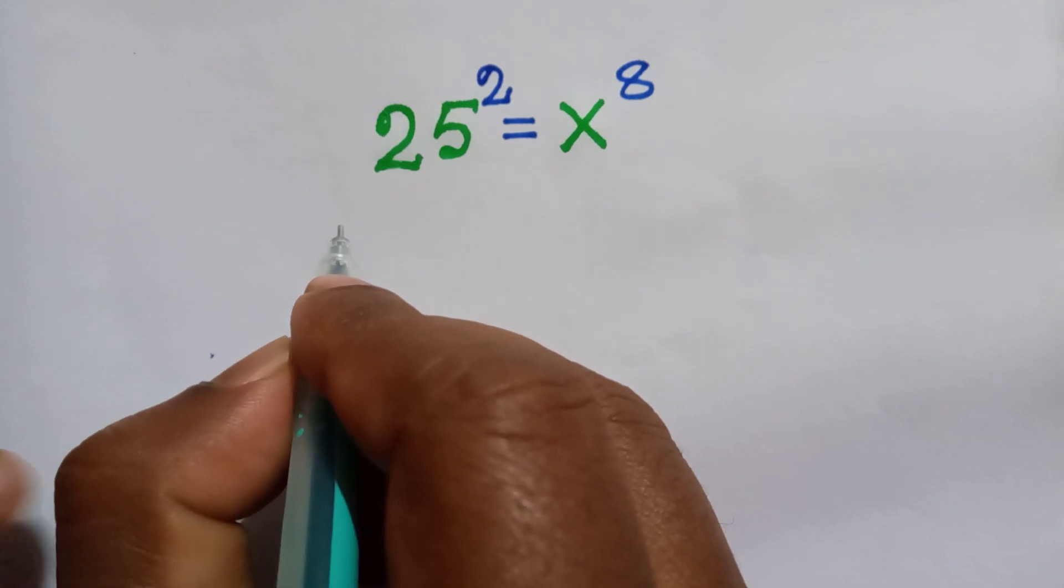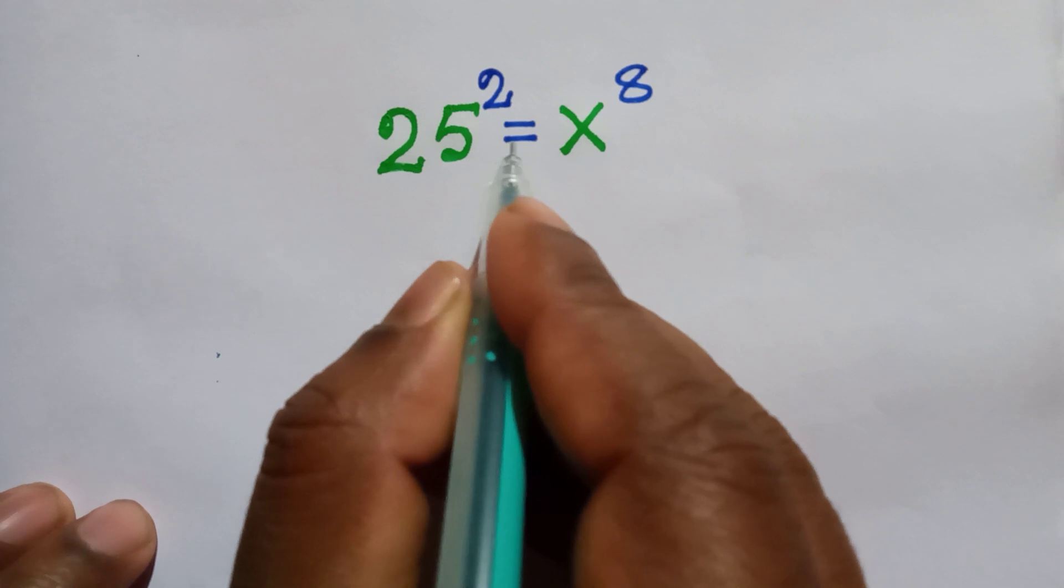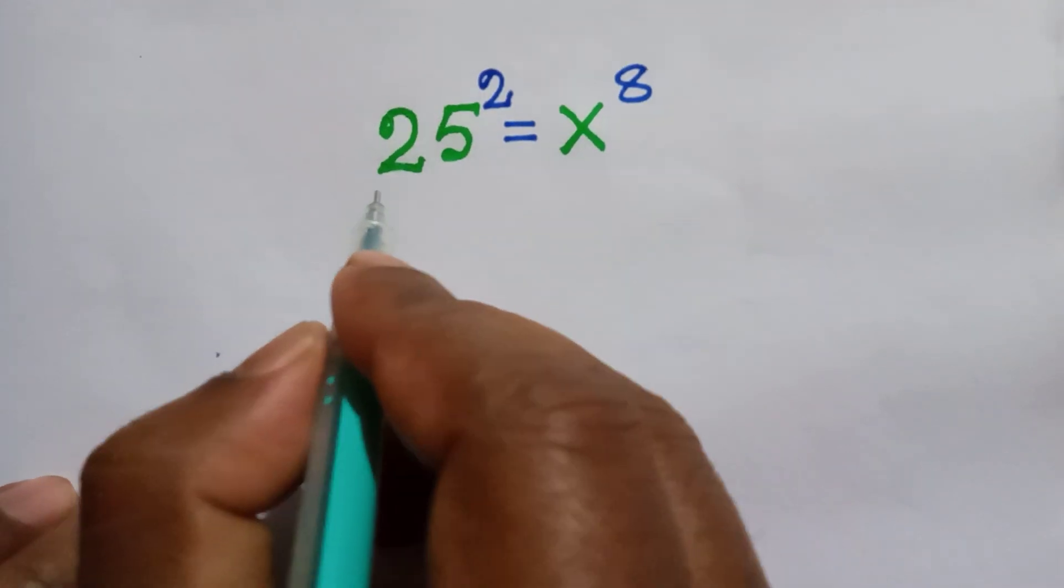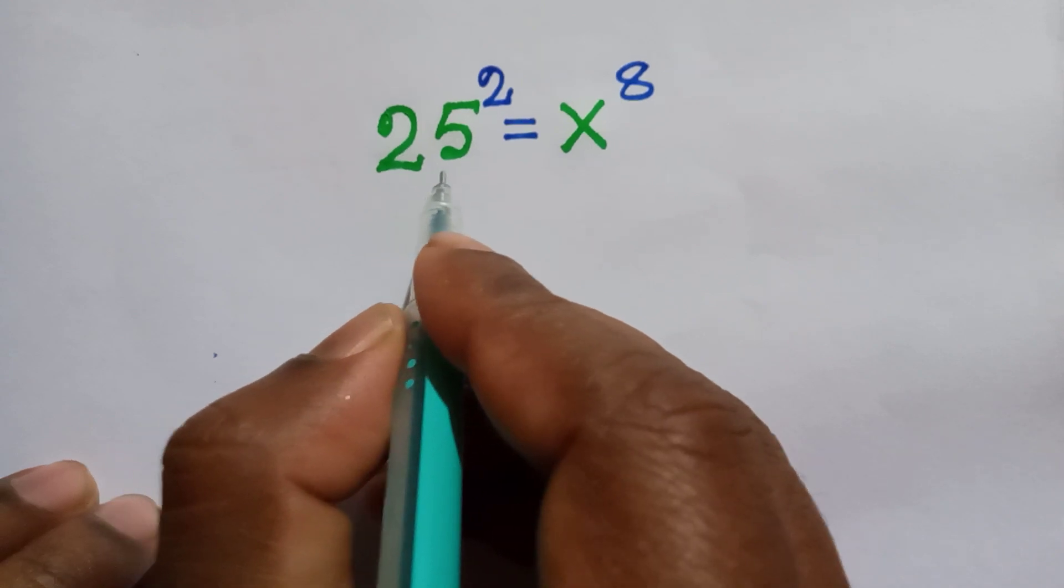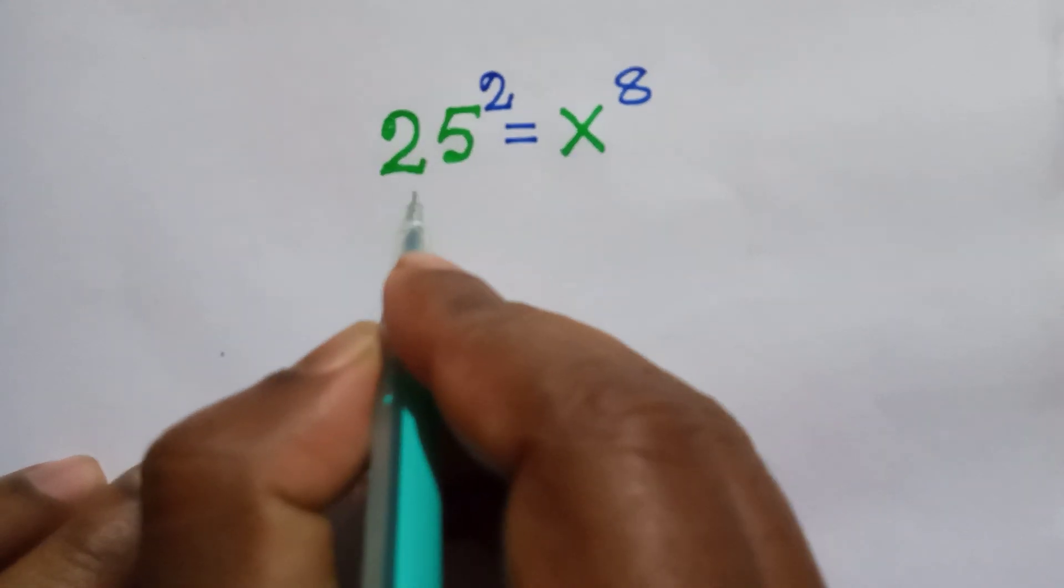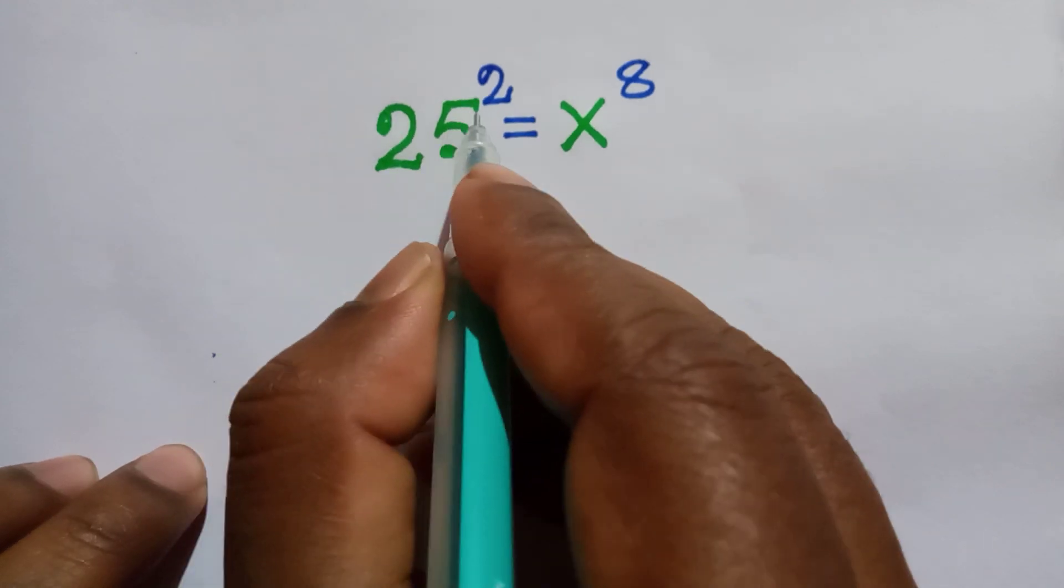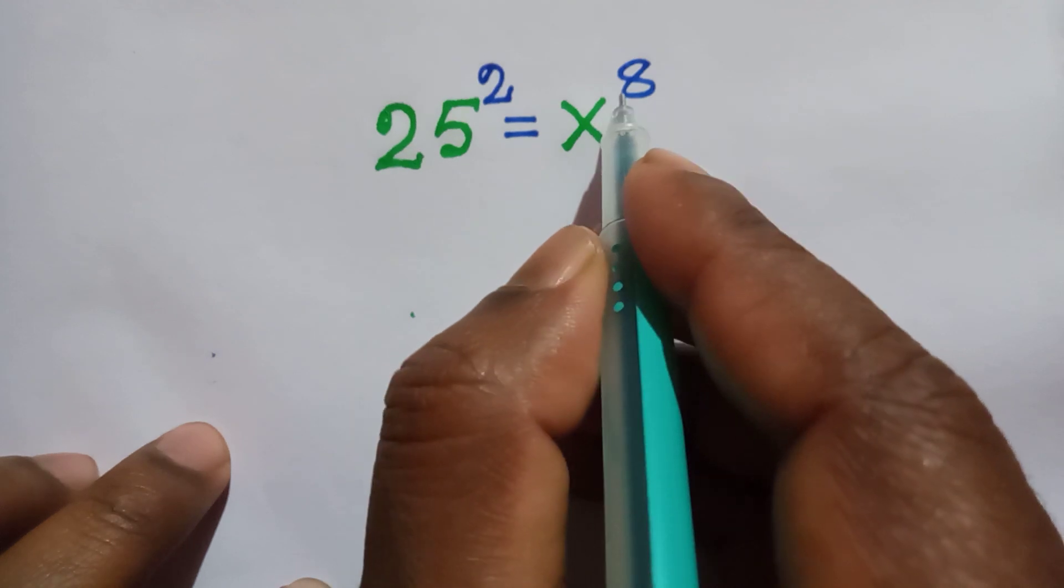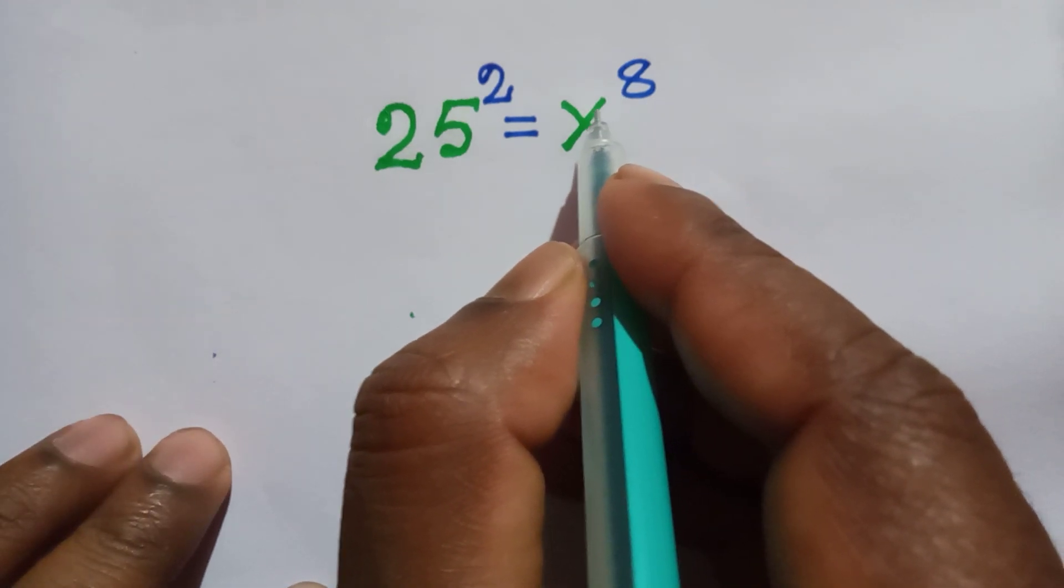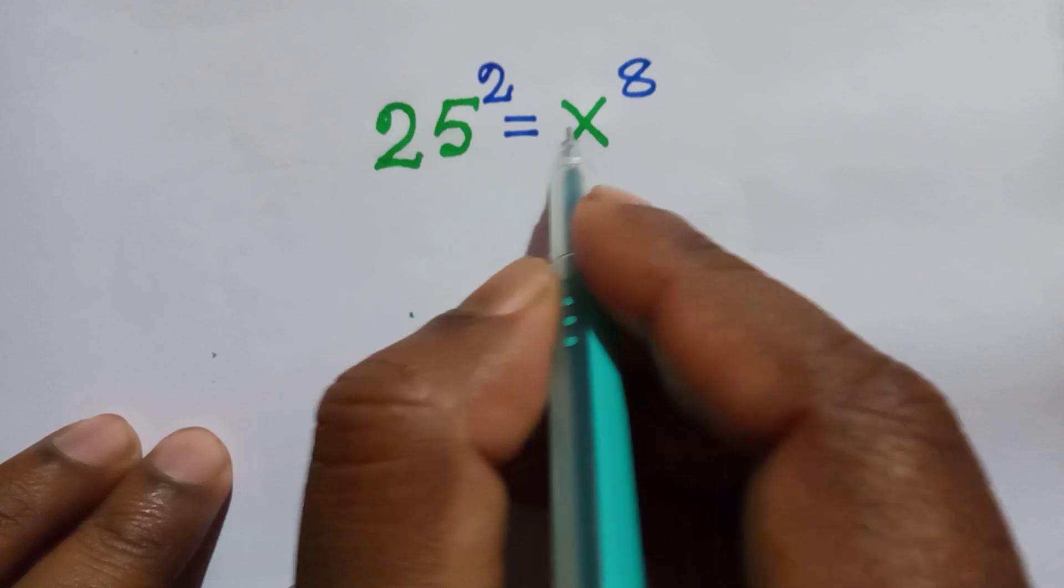Hello viewers, how are you? Here we have a math problem today. I am going to show this math solution. Here, 25 square is equal to x to the power 8. How to find the value of x?